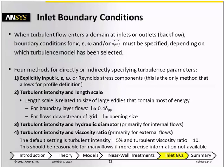In Fluent, you have four methods available to either directly or indirectly specify the boundary conditions for these variables.